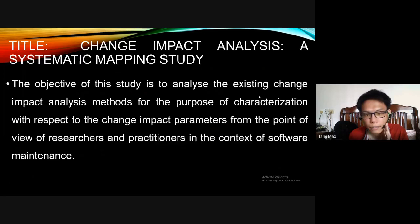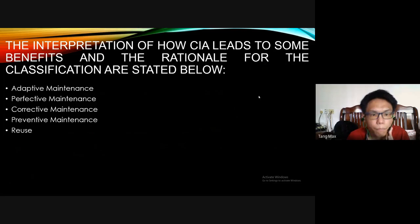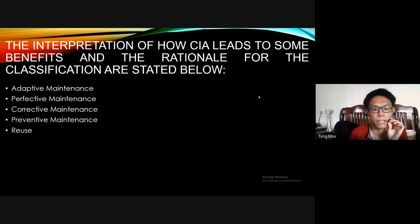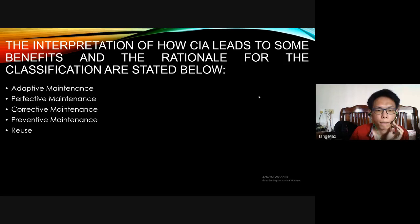The next part is about the interpretation of how CIA leads to some benefits and the rationale for the classification stated below. There are 5 points: adaptive maintenance, predictive maintenance, creative maintenance, preventive maintenance, and reuse.